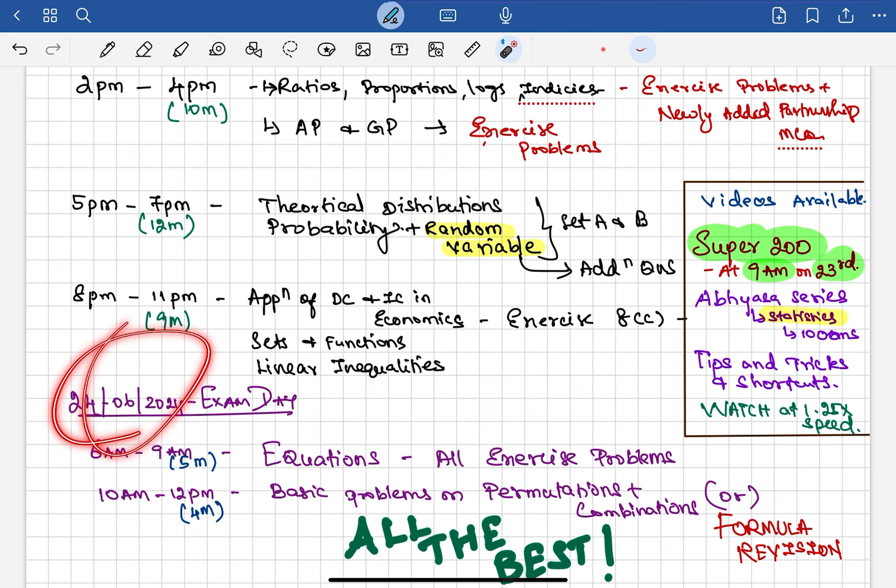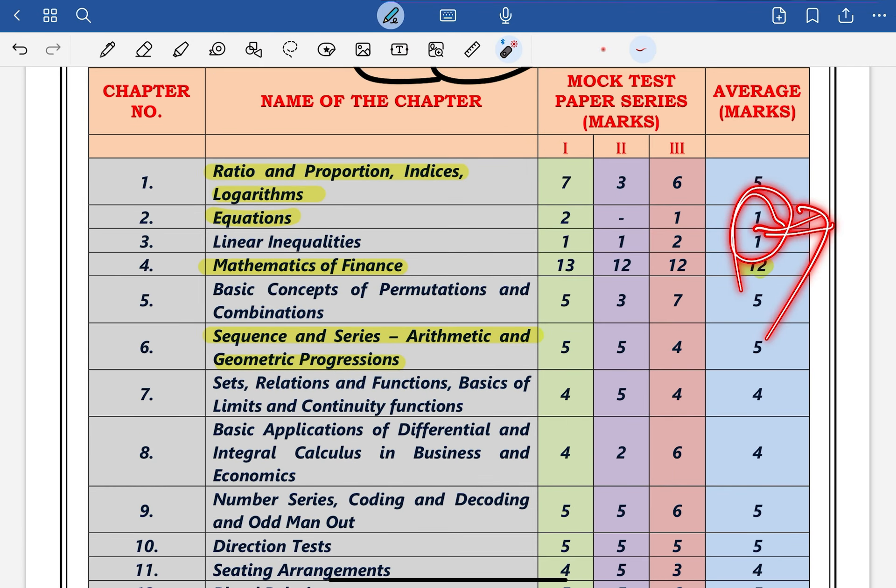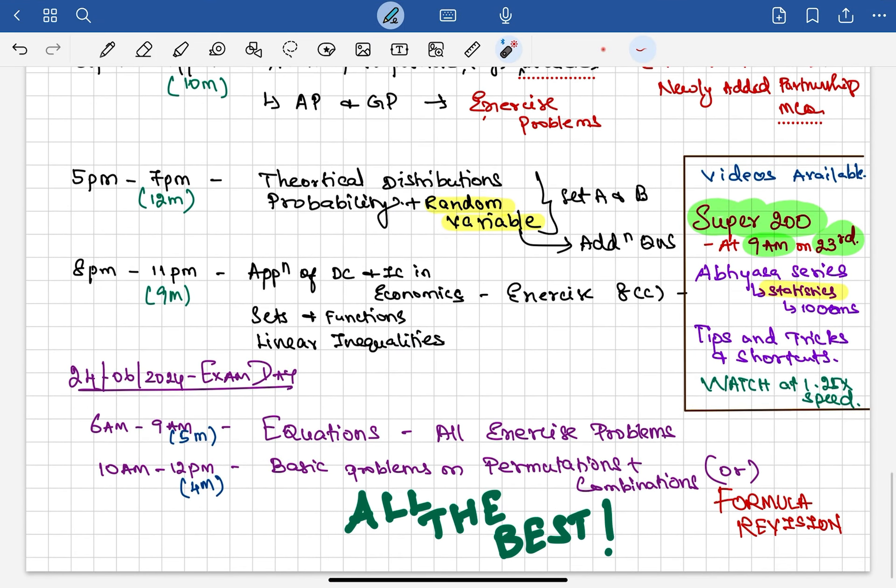On the exam day morning, focus on the Equations part. In the MTPs, they have tested only one mark on average, but I am expecting this Equations part will be tested for five marks at least. Do all the excess problems—go with shortcuts, trial and error method, elimination method. From 10 AM to 12 PM, do basic problems on Permutation and Combination—basic formulas, one-step approach, repetition allowed, repetition not allowed, bubbles together, bubbles not together. Or else, if you want to skip this chapter, you can skip it.